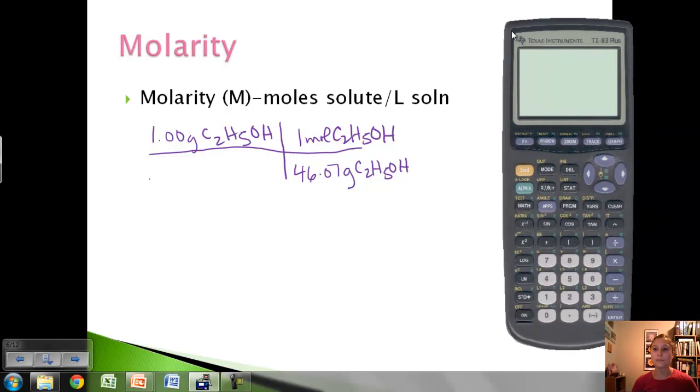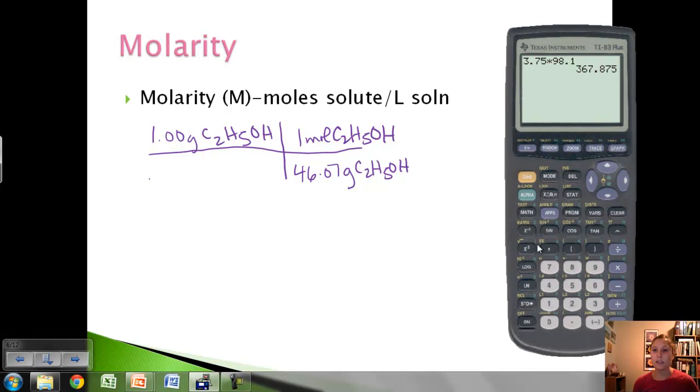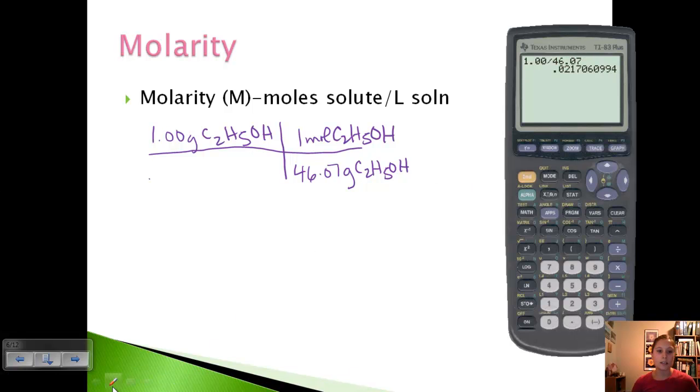Let's calculate: 1 gram divided by our 46.07 molar mass gives us 0.0217 moles of ethanol. That's our top part. Now we need our liters of solution.